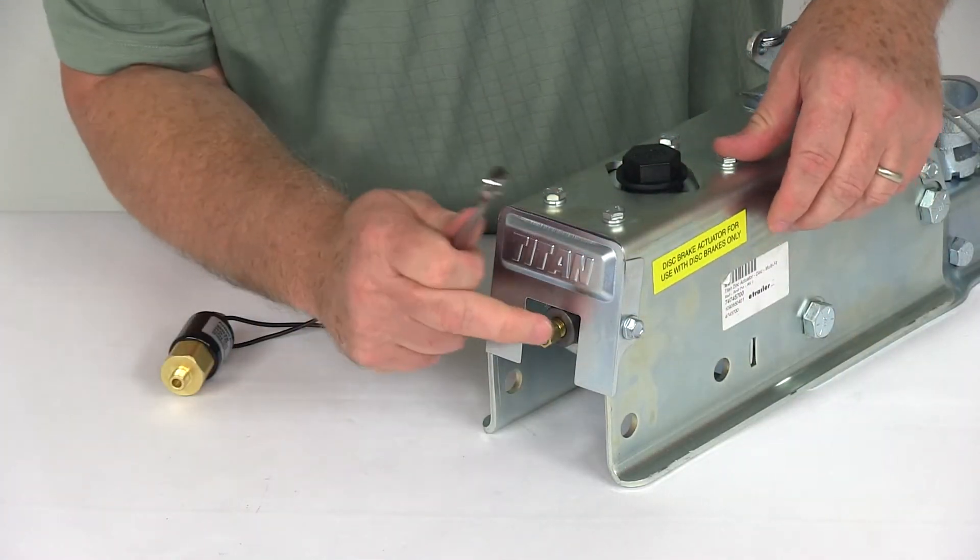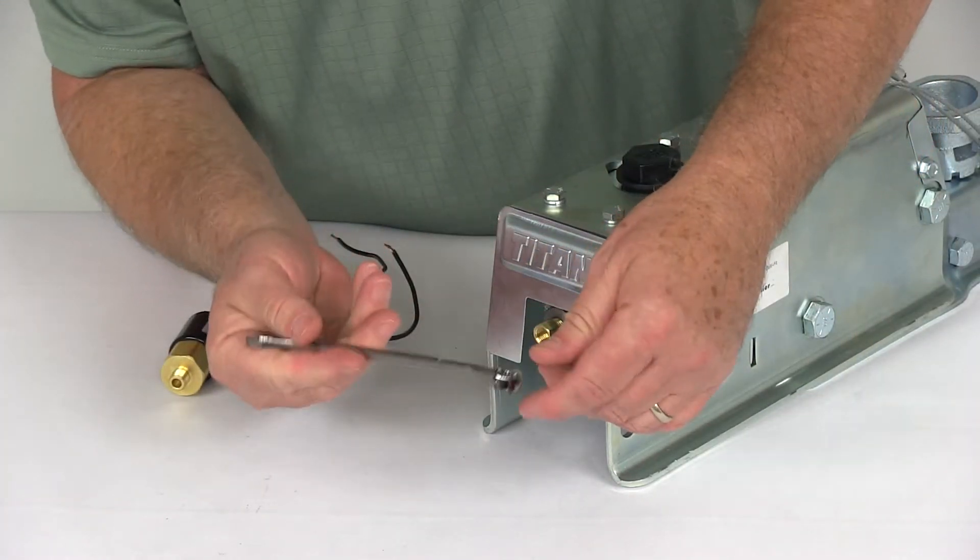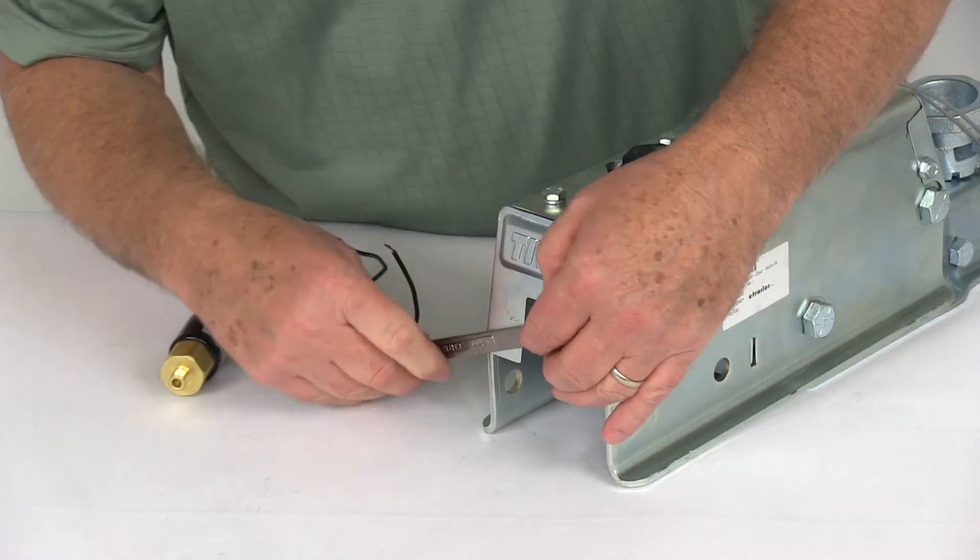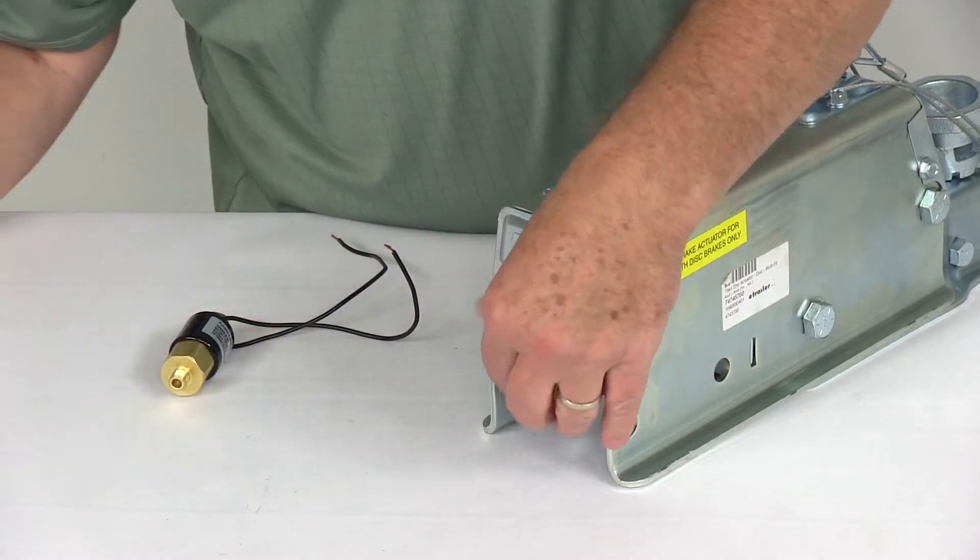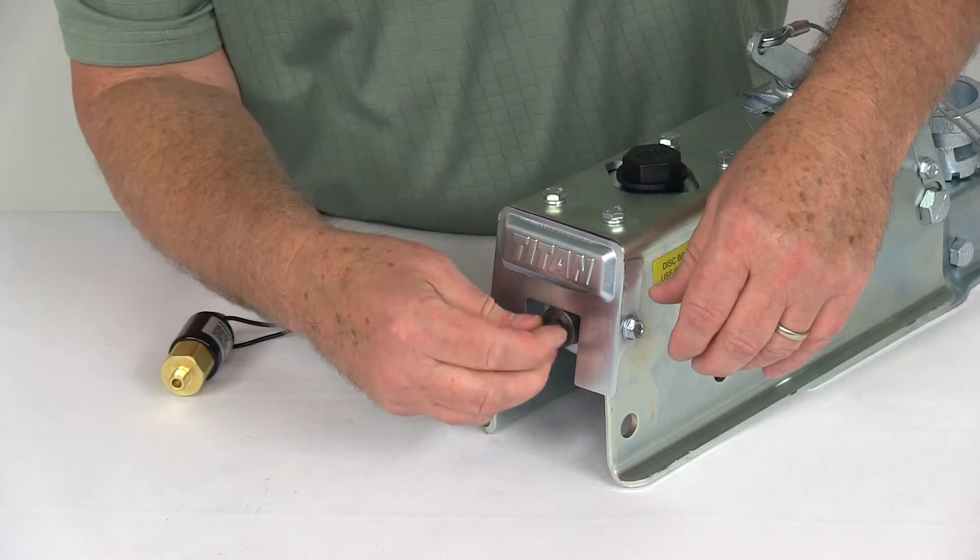Then remove the nipple that's already in there. Use a 12mm wrench and you can just unscrew the complete nipple out of the back of it.